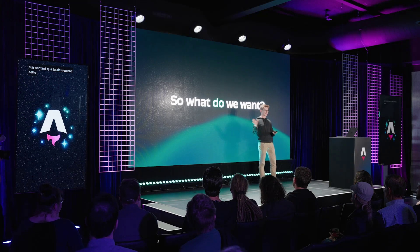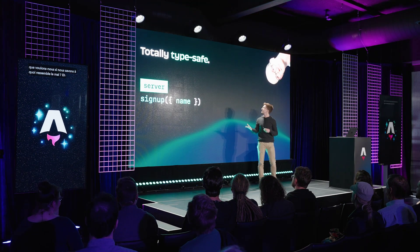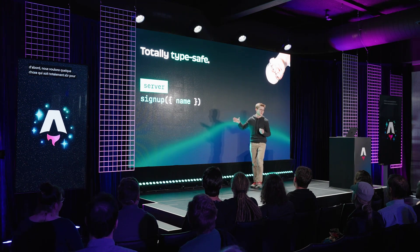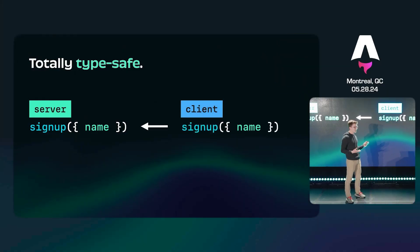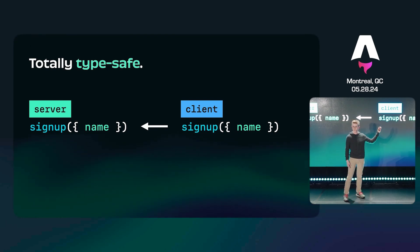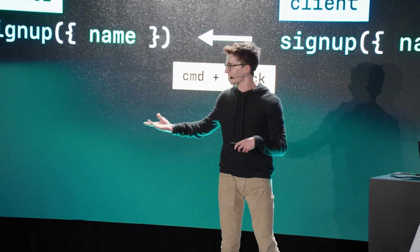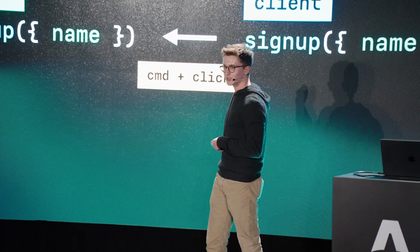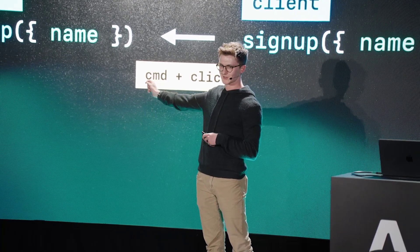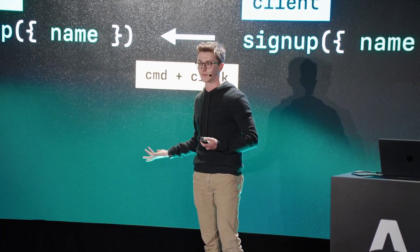What do we want if we know what the bad looks like? First off, we want something that's totally type safe. We want something where you can just write a function on your server and call it from the client with the exact same name, the same input, same outputs, all just using JavaScript. And when you command-click in your editor, you should jump right to the server implementation — no magic file paths or fetch calls to remember.